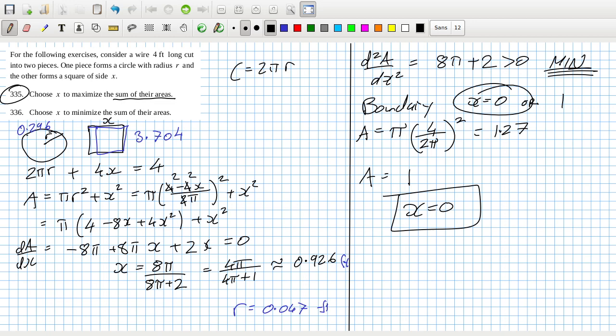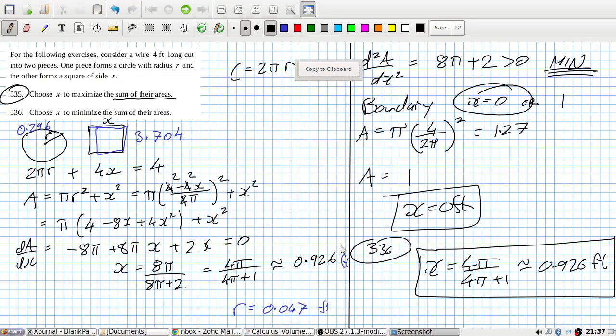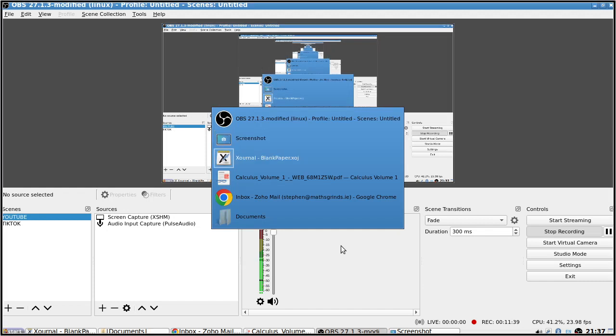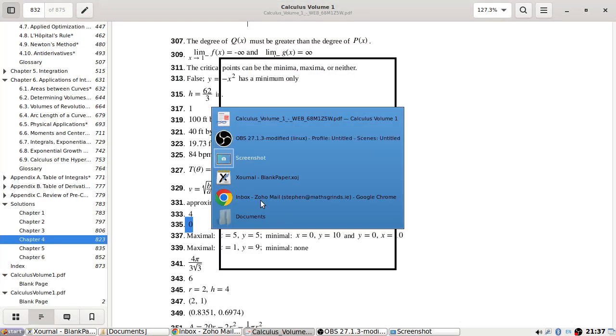Well, we know that one is x equals 4π over (4π + 1), which is roughly 0.926 feet. It doesn't have that answer. I think that's okay, I think we can leave it there for today.